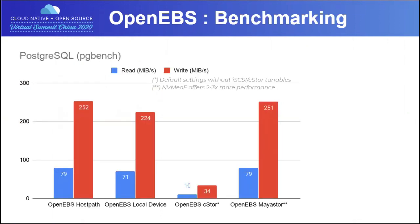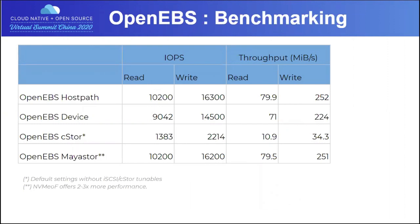This shows the Postgres benchmarking results. We recently did a CNCF webinar where we talked about this in more detail. What we see here is a comparison between running directly on host path or a device versus running with C-store. C-store still uses iSCSI but uses the poll mode driver to drive up the performance, whereas C-store is mostly a ZFS porting to user space using iSCSI. As expected, because of those various layers, performance there is lower, as it does not use the native concepts for enhancing performance incorporated into Mayastor.